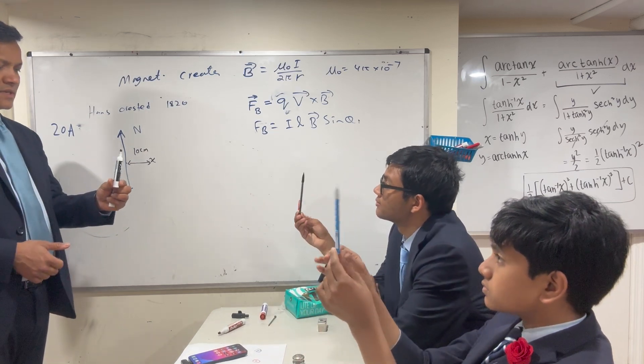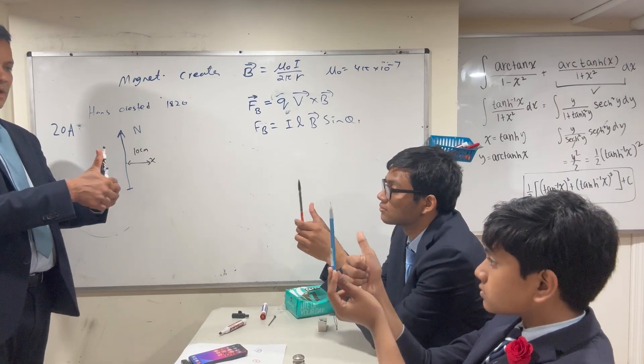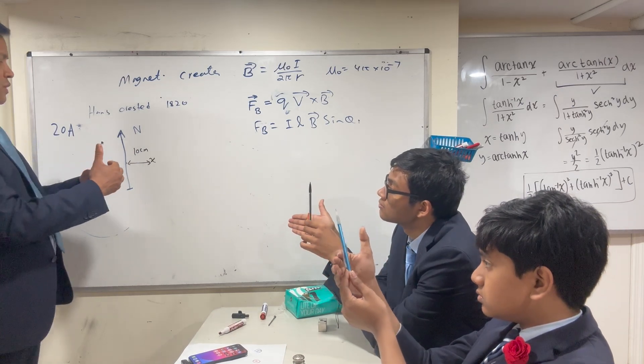Place your thumb at the direction of the current. Curl your finger as if you are trying to hold the wire.